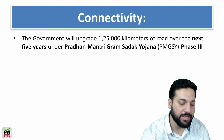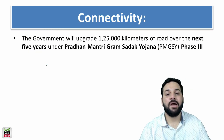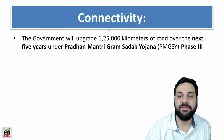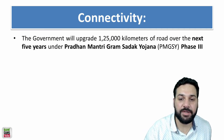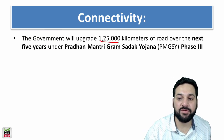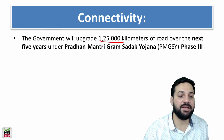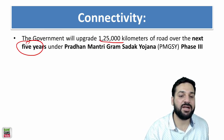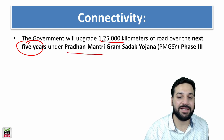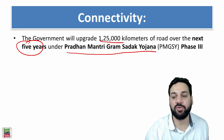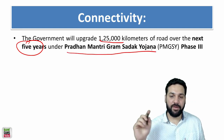On connectivity, 1,25,000 kilometers of roads will be constructed in the next five years under Pradhan Mantri Gram Sadak Yojana Phase 2.